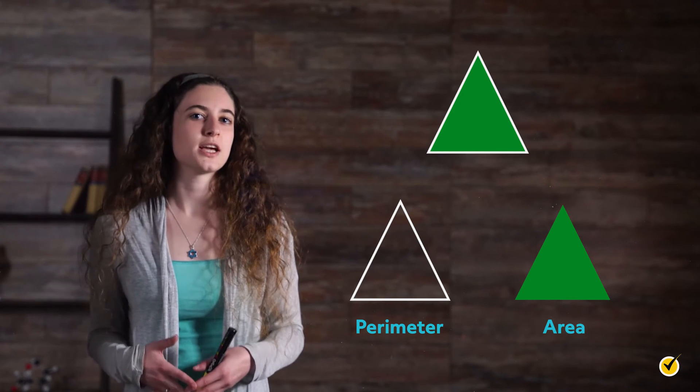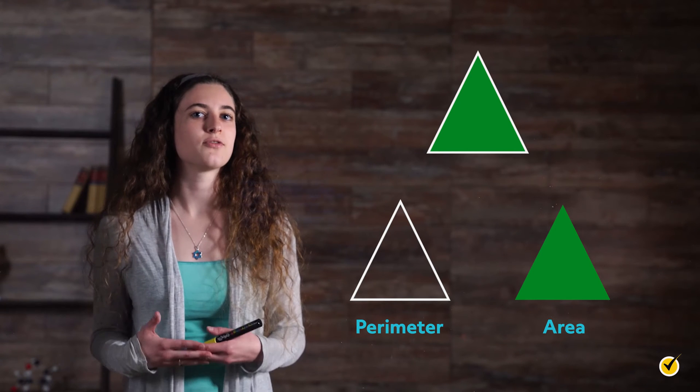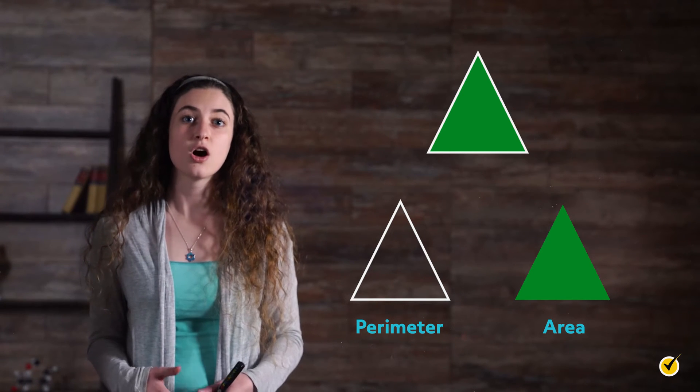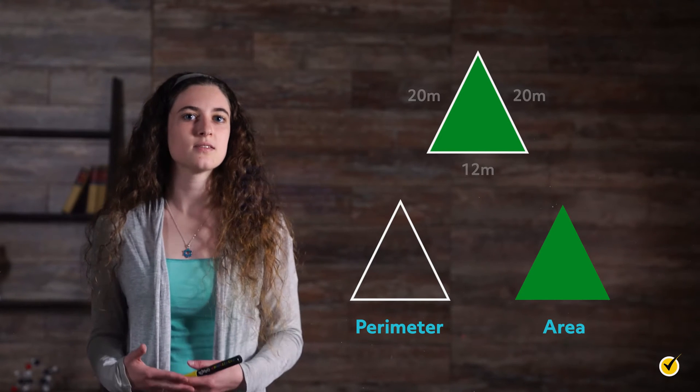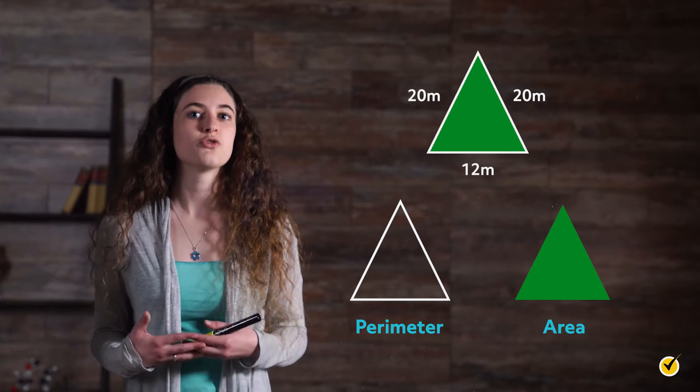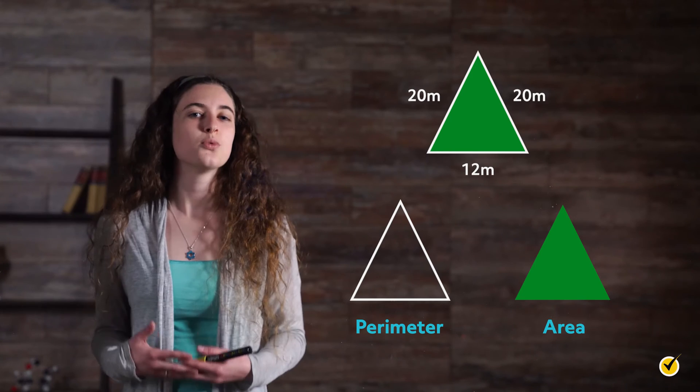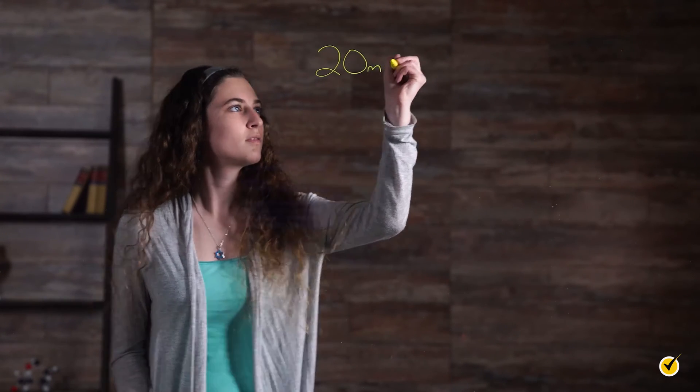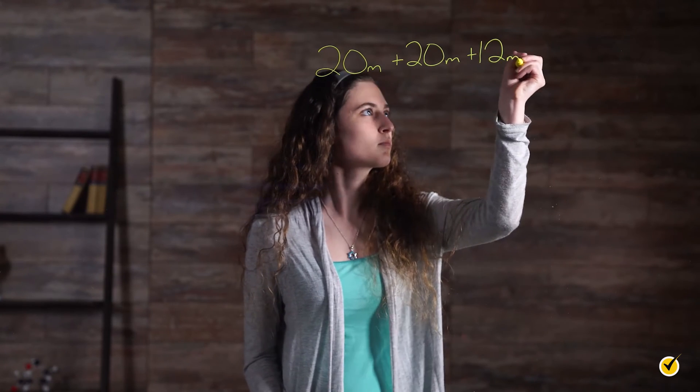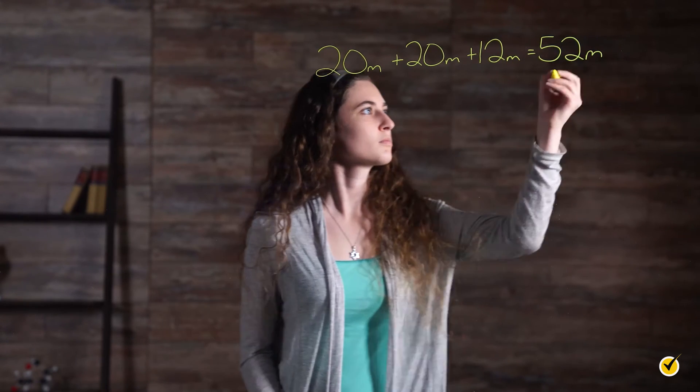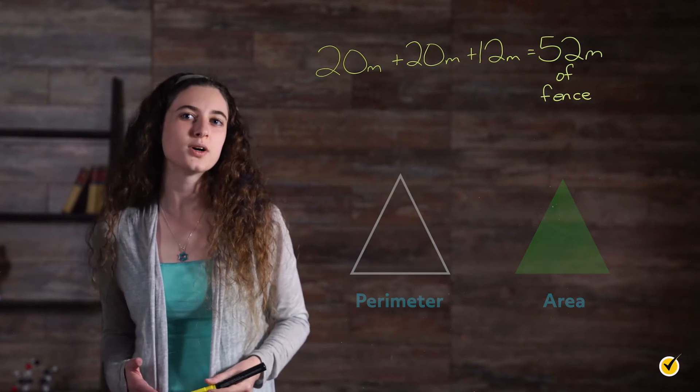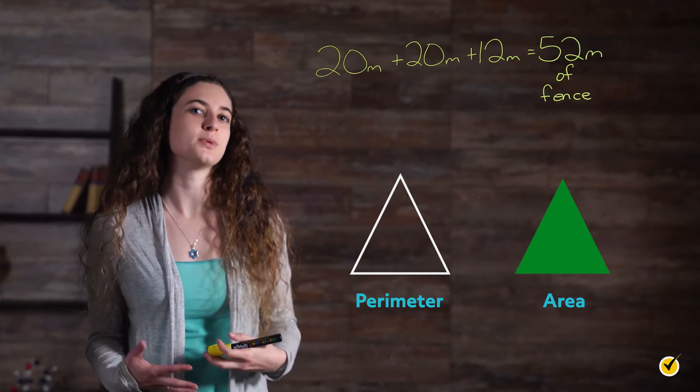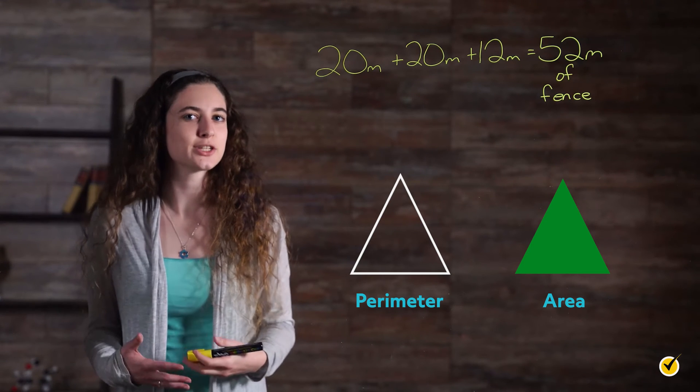Okay, now that we know what perimeter and area are, let's figure out how to find the perimeter. We don't need any fancy formula or anything. All we need to do is add the length of the sides together. So if we know all the sides of our yard, we can easily find the perimeter. 20 meters plus 20 meters plus 12 meters gives you 52 meters of fence. Not much to that one.